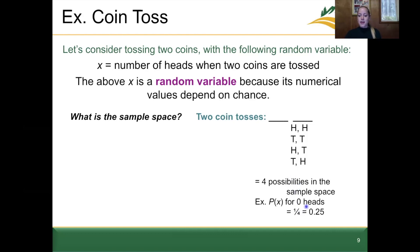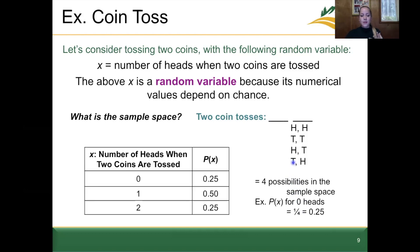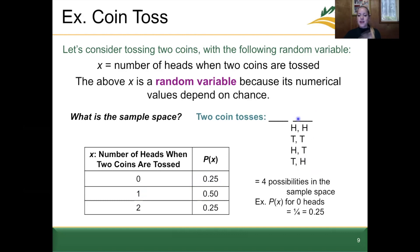Doing this for the other options, we get the following table. For zero heads, the probability is 0.25. For getting one head, we have two options out of four possibilities, so the probability is 0.5. For getting two heads, similar to zero heads, we have one option out of four, so the probability is 0.25. Our variable x is the number of heads — zero, one, or two — and we figured out the probabilities by first determining the sample space, then calculating the probability for each variable value.